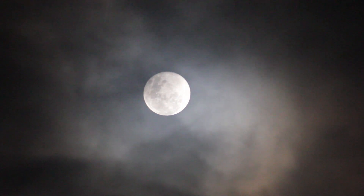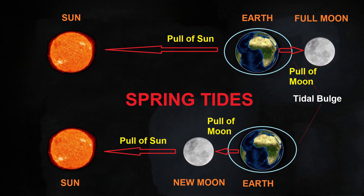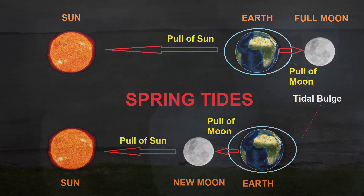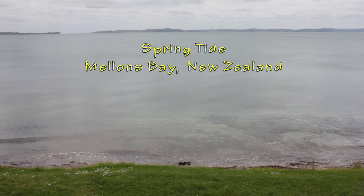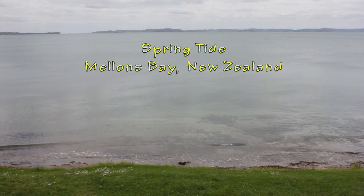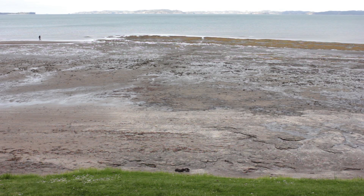At times when there is a new moon or full moon, the Sun, Moon and Earth are approximately aligned. The higher gravitational pull of these combined forces results in higher than normal high tides and lower than normal low tides. These are called spring tides.